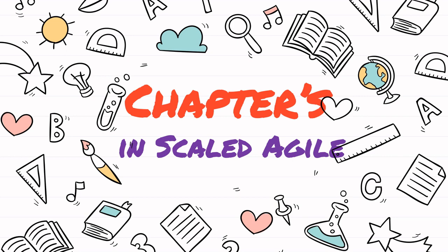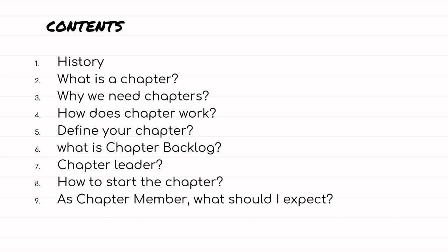Hi friends, today we're going to learn about an interesting yet powerful model — the Spotify Scaling Agile Model — with one of its components: Chapters. We've been using a few best practices with our client in a multiple-vendor setup for the last three years, and it's a very effective model. In this video we'll cover: history, what is a chapter, why we need chapters, how chapters work, defining your own chapter, chapter backlog, chapter leaders and their roles, how to start chapters, and what to expect as a chapter member.